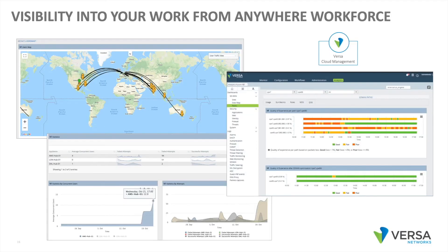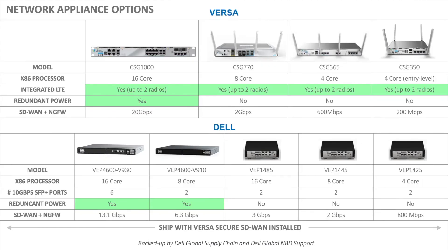Versa also includes powerful analytics to give you visibility into your network. In terms of appliances, Versa offers its own family of network appliances ranging from small cost-effective units to very high-end appliances. Dell also offers five different network appliances that ship imaged for Versa and boot up as a Versa node, all backed by Dell's global supply chain and global next business day support. You can mix and match these as you see fit.